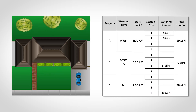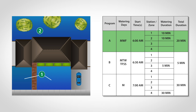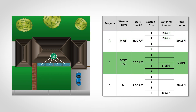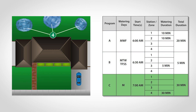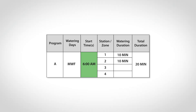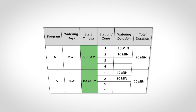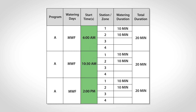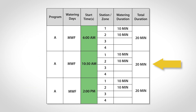Each of the programs will run in sequence, and any zones that have been scheduled will run according to the designated start times and durations. The most common scheduling error for any program-based controller is setting multiple program start times in one program that cause the entire watering cycle to repeat, and it can double or even triple the amount of water you're applying to each zone.